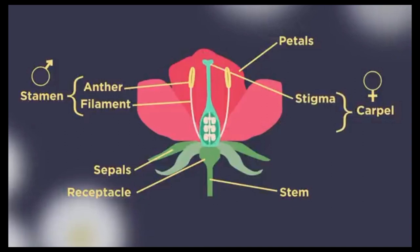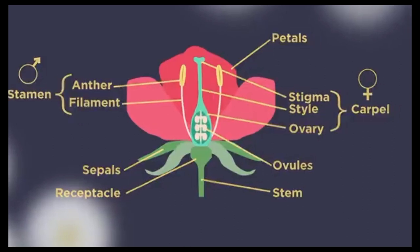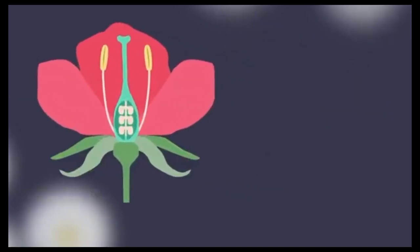The female part of the flower is called the carpel, and this consists of three parts: the stigma, a sticky landing for pollen; the style, where the pollen grain descends; and the ovary, where the female gametes or sex cells are located. Within the ovary, ovules produce female gametes.